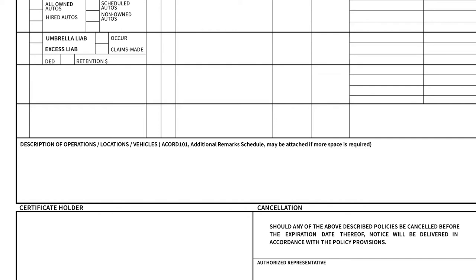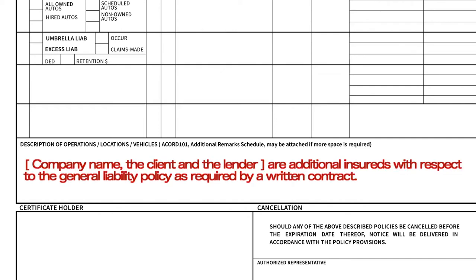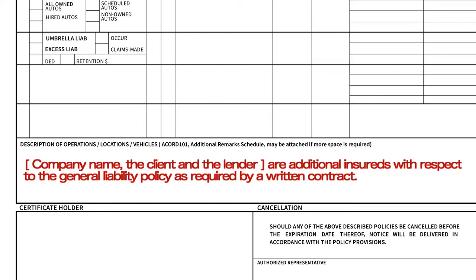The language that you should look for may be similar to this: 'Your company's name, the client, and the lender are additional insured with respect to the general liability policy as required by written contract.'